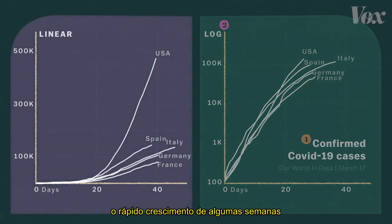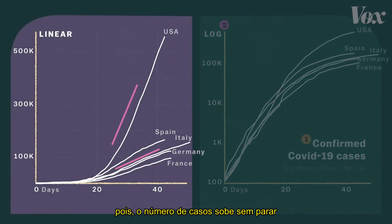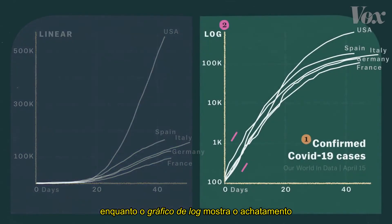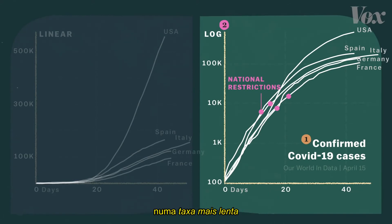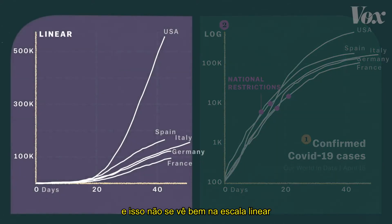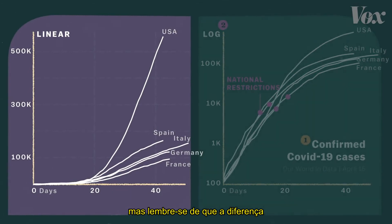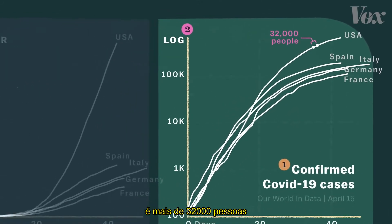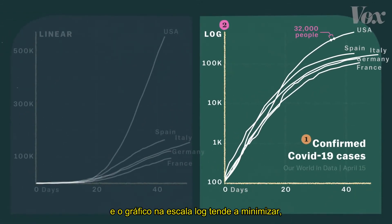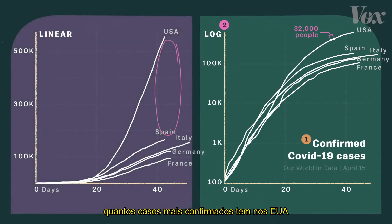Fast forward a few weeks, and the linear scale shows cases climbing and climbing, while the log chart shows curves that are flattening. As governments have implemented lockdowns and social distancing, the virus is spreading at a slower rate than before, which isn't very visible on the linear scale. But keep in mind that the difference between this dot and this dot is more than 32,000 people. And the log chart tends to downplay just how many more confirmed cases there are in the U.S. than in the other countries.